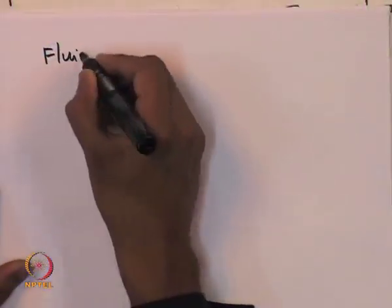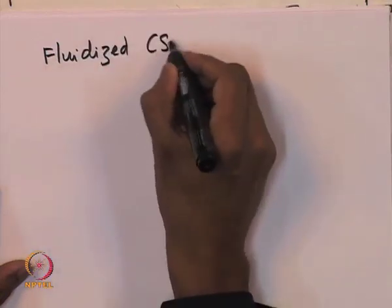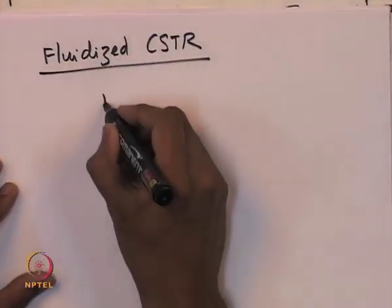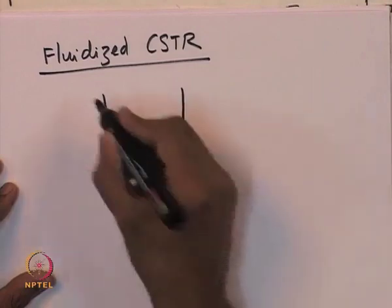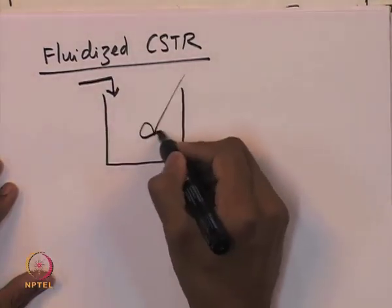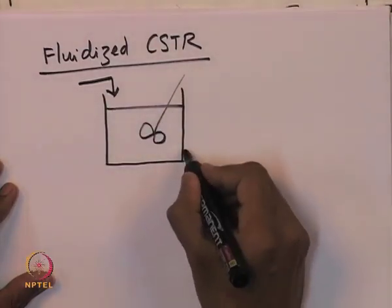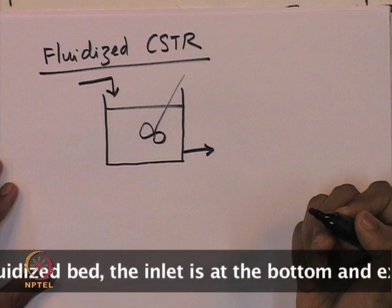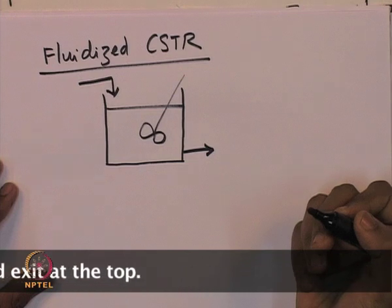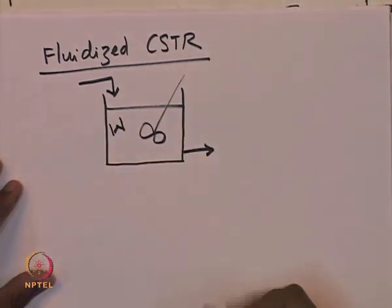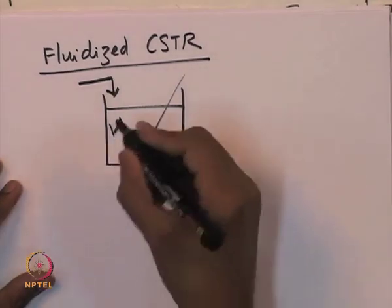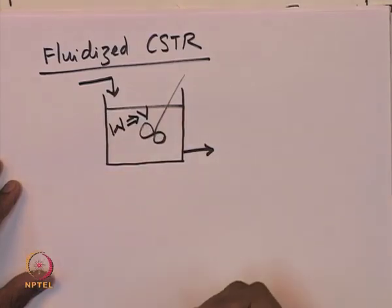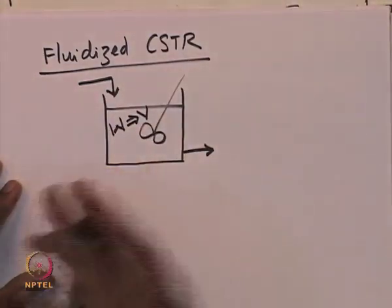Let us now look at what happens if we conduct the reaction in a fluidized CSTR. A CSTR is essentially a well-mixed tank with a feed inlet, a fixed volume, and an outlet stream. For a fluidized bed, the inlet is typically at the bottom and the exit at the top. The question is: how much catalyst needs to be packed in the CSTR in order to obtain the same conversion as the packed bed reactor?